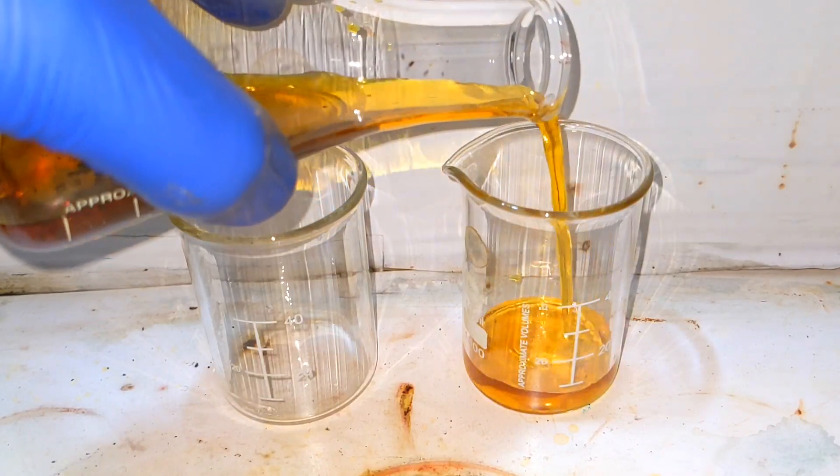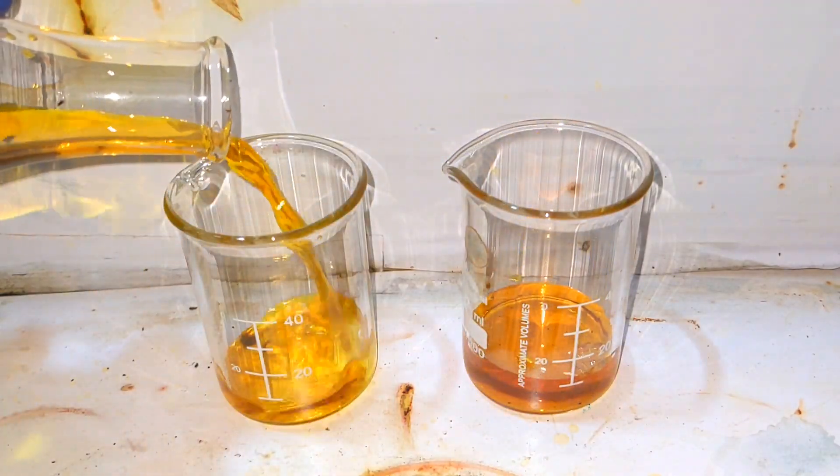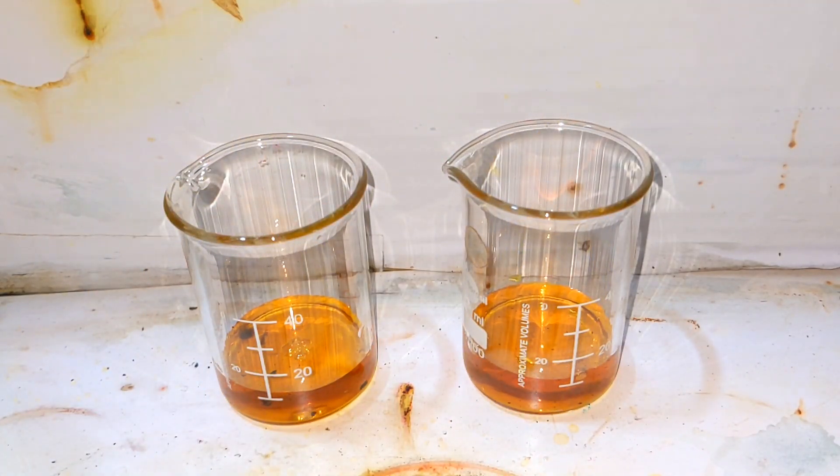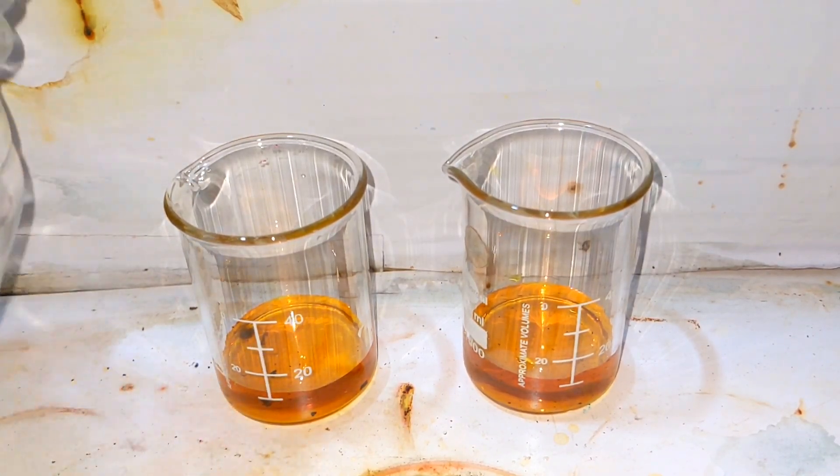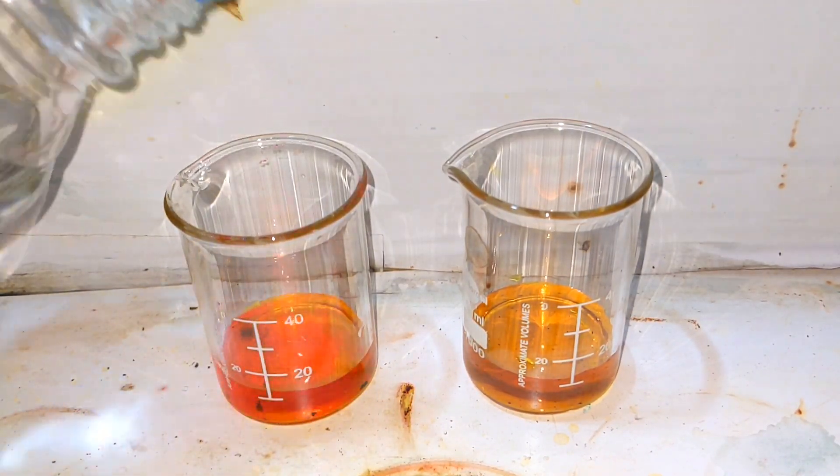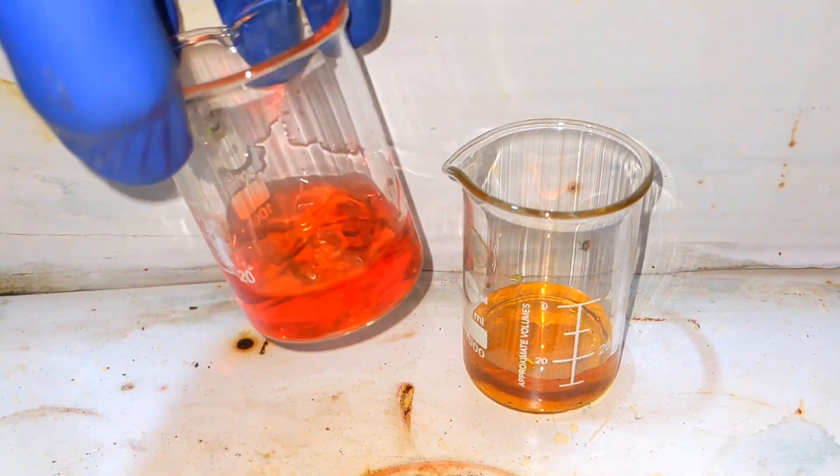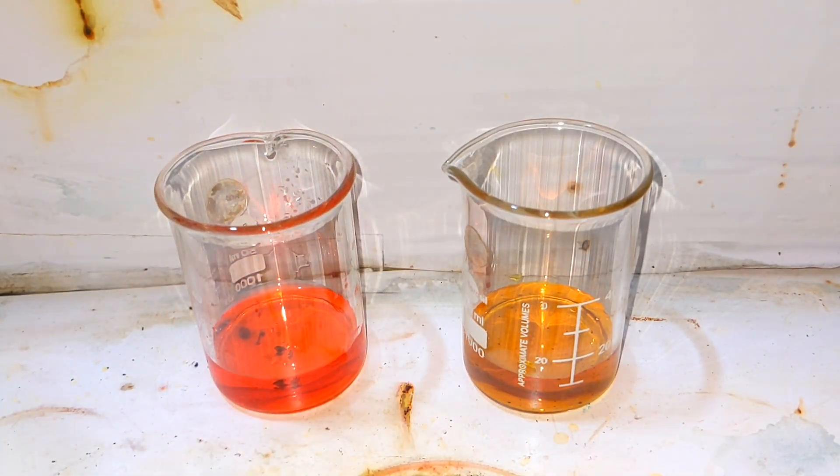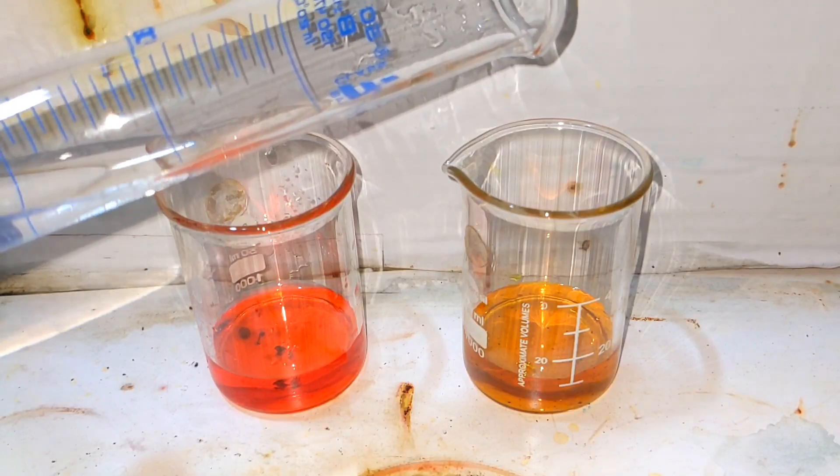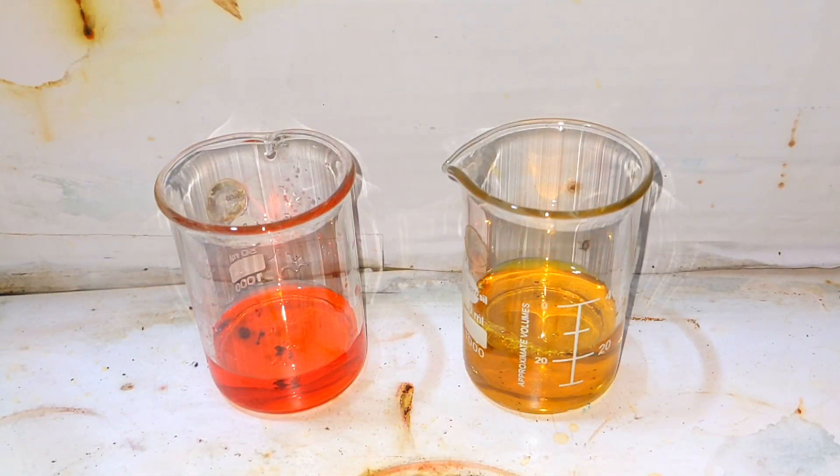We have taken two beakers and into both of the beakers the methyl red solution was added in equal amounts. Into the first beaker we added some hydrochloric acid and you can immediately see how the color changed to a red color. To the second beaker was added sodium hydroxide solution and you can see that the color lightened.